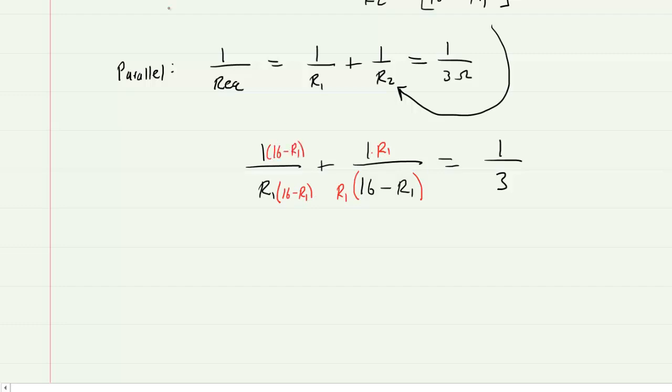And once we've established the common denominator, we can actually merge this into one single fraction. So we'll have R1 multiplied by 16 minus R1 in the denominator. And then up top we have 16 minus R1 plus R1. And this will equal 1 over 3.